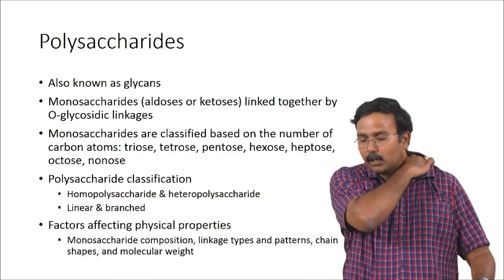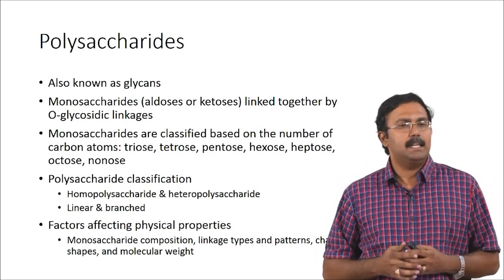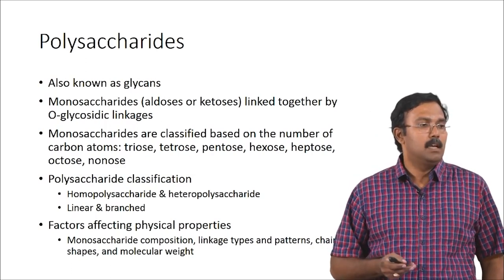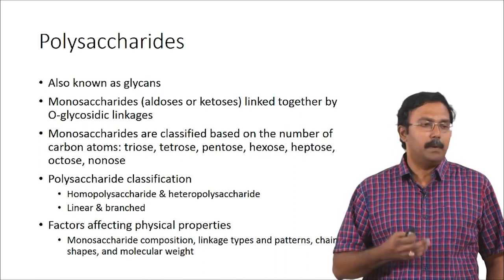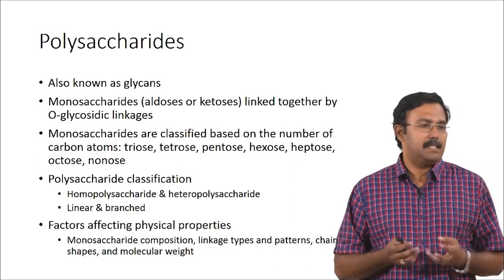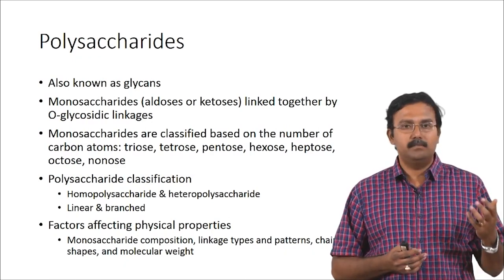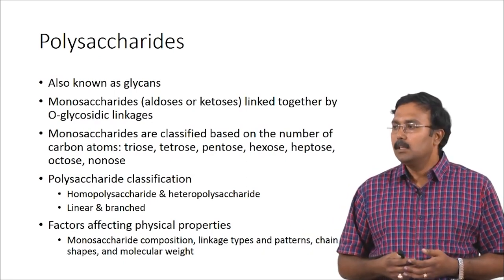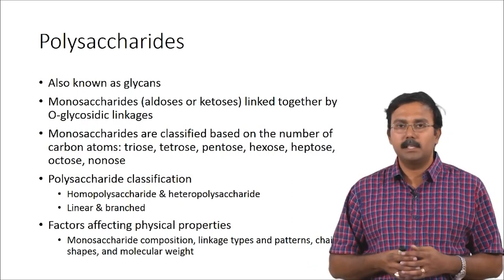We will first start talking about polysaccharides, also known as glycans. Polysaccharides are bunches of monosaccharides linked together. The monosaccharides could be aldoses or ketoses and they are linked by glycosidic linkages. Monosaccharides are classified based on the number of carbons — triose, tetrose, pentose, hexose, heptose, octose, nonose, and so on. These are the monosaccharides which are the building blocks for the polysaccharides.